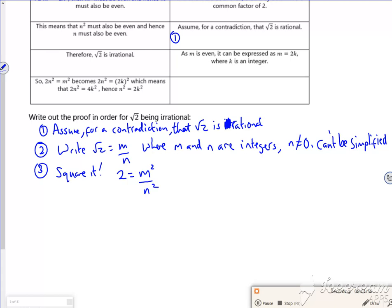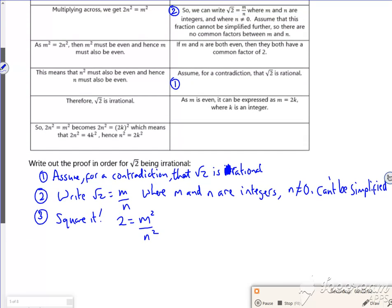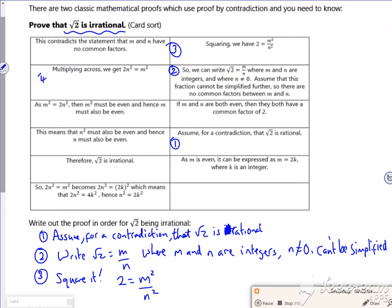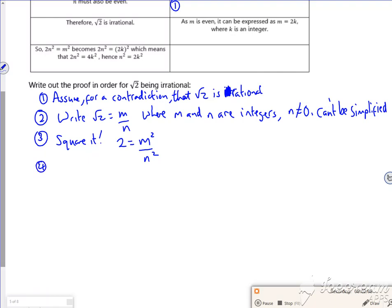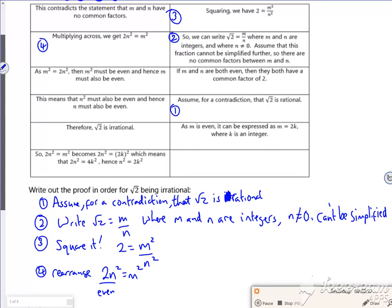Now, that should then move on to slightly rearranging it, which is this one here. So then I'm going to rearrange it. So I've got two n squared is equal to m squared. Now, here's my issue. That is even. There. So I've got to find something that talks about two n squared being even. And that is this one here.